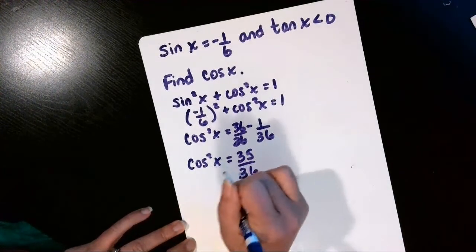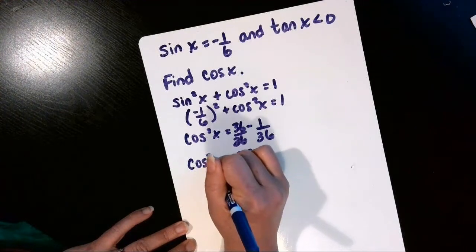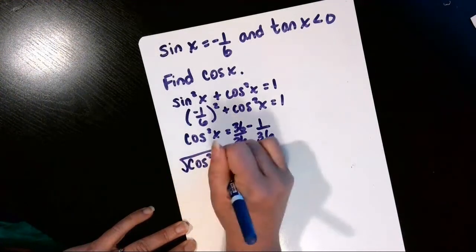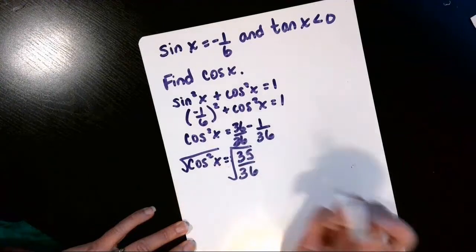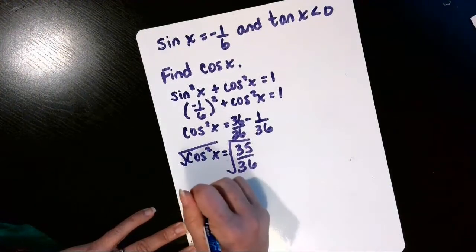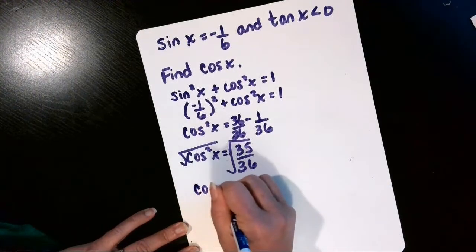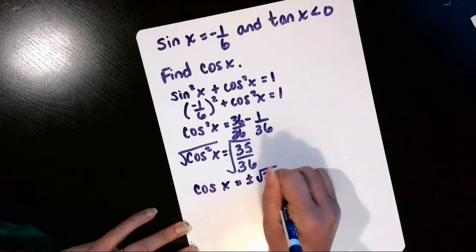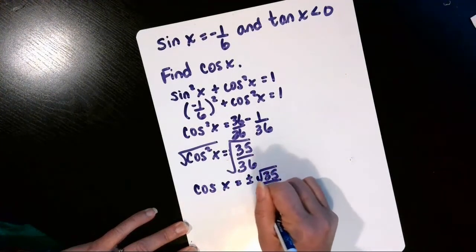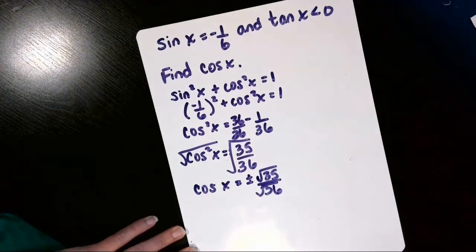So to get cosine squared x undone, we're going to use the inverse of square, which is a square root, and square root both sides. So now the cosine of x is plus or minus the square root of 35 over the square root of 36.